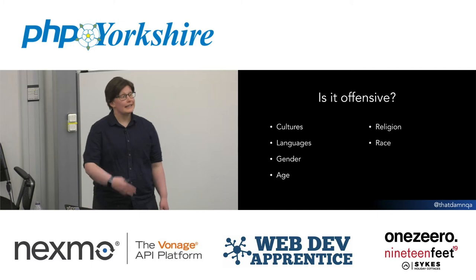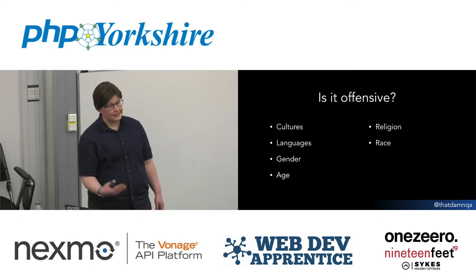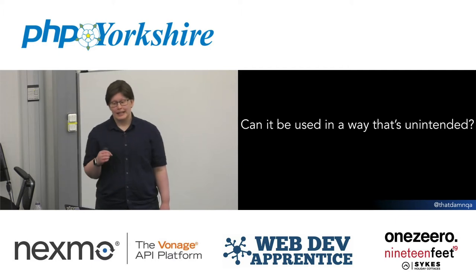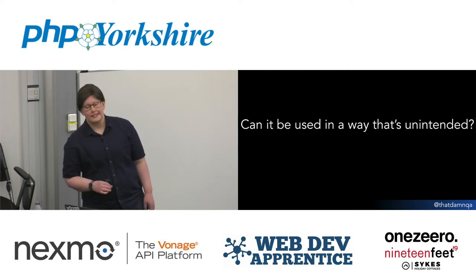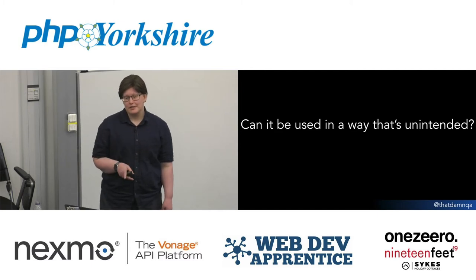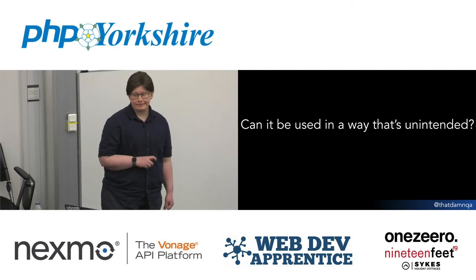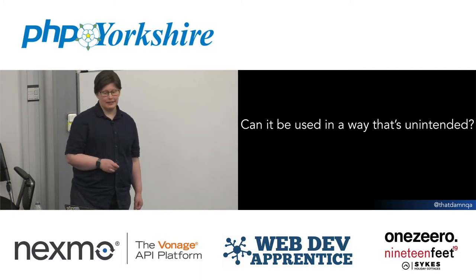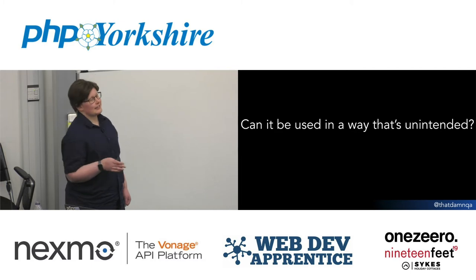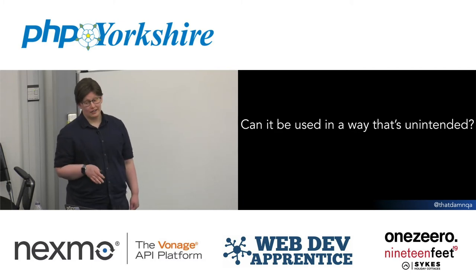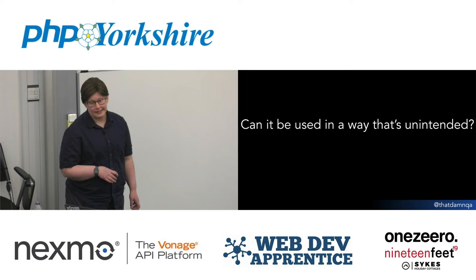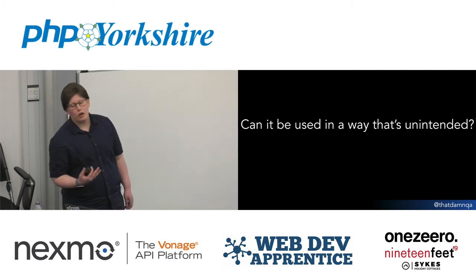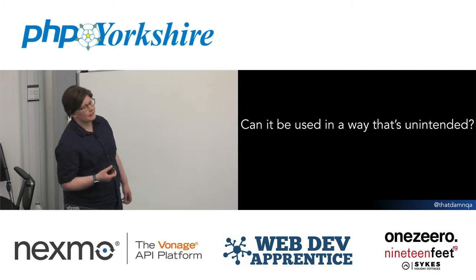The more information we can give to the product owners and decision makers, the more useful we can be. Finally, when it comes to the history of social media — can your product be used in a way that's unintended? I've got quite a meaty use case for this: a product that's been used in an unintended way quite a lot, especially in the last few years, and it means it's become, in my opinion, a worse product with a bad reputation.